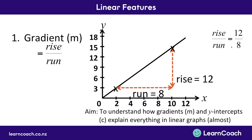This is a valid answer, but it's not the only way to write the gradient. For those familiar with fractions, you can simplify 12 over 8 — dividing top and bottom by 4 gives you 3 over 2, which is also correct. Or using a calculator, 12 divided by 8, or 3 divided by 2, both give you 1.5. So we have three ways to write this gradient: 12 over 8, 3 over 2, and 1.5. Every one of these is correct — they're all the same number, just written differently.